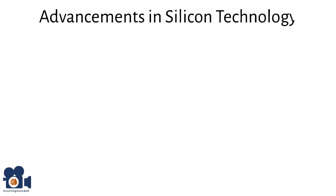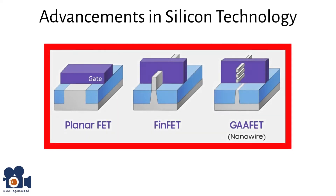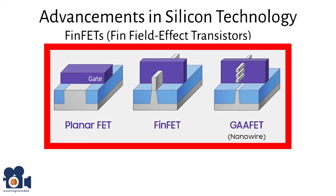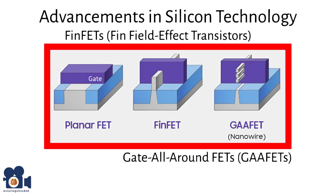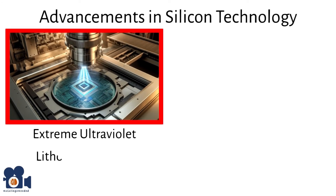There have been continual advancements in silicon technology, particularly in FinFETs and GAAFETs. FinFETs — fin field-effect transistors — use 3D structures to control current flow, resulting in improved performance and energy efficiency over traditional planar transistors. Gate-all-around FETs (GAAFETs), the next evolution after FinFETs, provide even better control over the channel and further reduce leakage currents, enhancing power efficiency and performance. Additionally, extreme ultraviolet lithography is enabling the production of smaller feature sizes down to 5 nanometers and beyond, critical for continuing Moore's Law, which predicts the doubling of transistors on a chip approximately every two to four years.